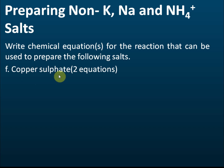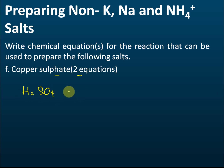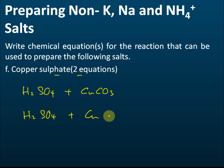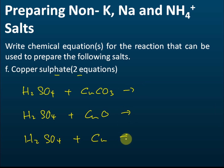Now let's prepare copper(II) sulfate — but this time only two equations, not three. Since we want sulfate, we use sulfuric acid (H₂SO₄). We can react it with copper carbonate, with copper oxide, or with copper metal. Let's write out all three and then explain why only two are valid.